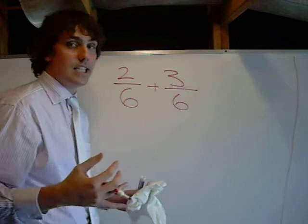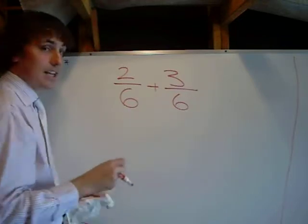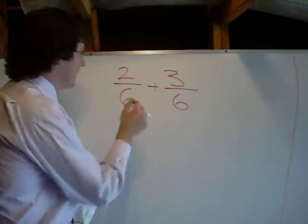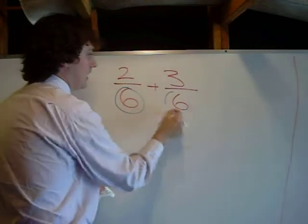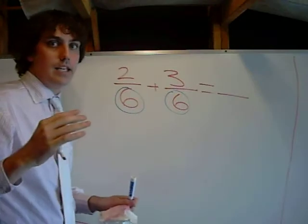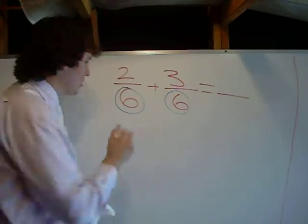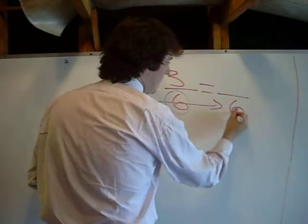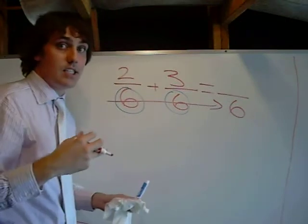Alright, so in this instance, you'll notice that my denominator, or the bottom number, is the same. A 6 and a 6. When this is the case, we can do something really easy-breezy. All you've got to do is go, and you put that 6 right there, because they're the same.